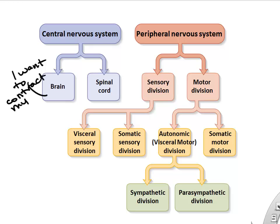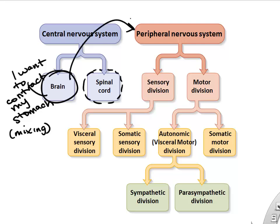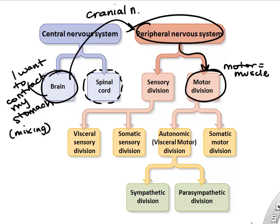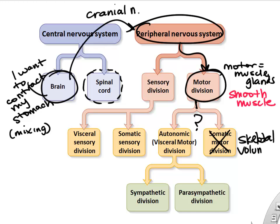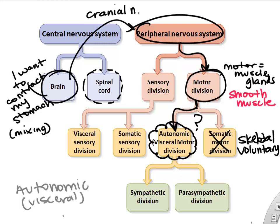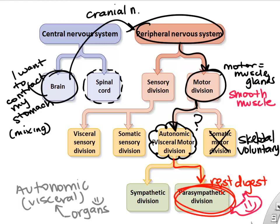Compare that to contracting your stomach to mix food — you would send signals from the brain, usually through cranial nerves and the peripheral nervous system. This is still a motor signal since it's efferent going to an effector, but instead we use the autonomic nervous system — specifically the visceral motor or autonomic nervous system — to regulate involuntary smooth muscle in organs like your stomach.